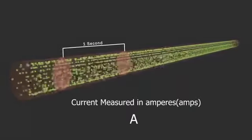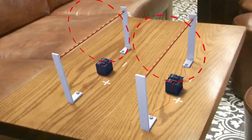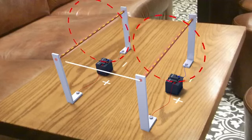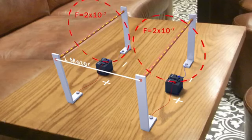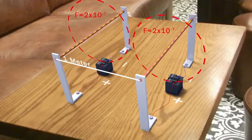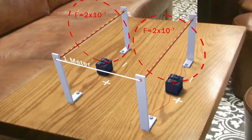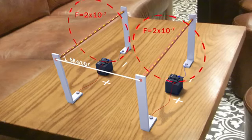A current of one amp means that current passes through a cross section of two conductors which are placed in parallel, one meter apart, with 2 times 10 to the power of minus 7 newton per meter force occurring in each conductor. It can also mean charges from one coulomb, or 6.24 times 10 to the power of 18 electrons, passing through a cross section of a conductor in one second.